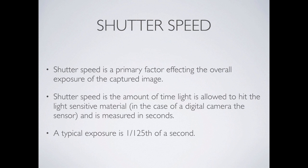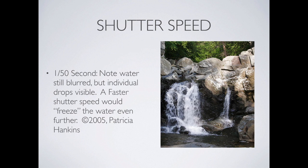The next factor is shutter speed — probably the easiest for people to understand. Shutter speed is how long I'm allowing light to hit the light-sensitive sensor. It's generally given in fractions of a second; a typical shutter speed might be 1/125th of a second. It deals a lot with how we capture motion. At 1/50th of a second we can see individual droplets of water frozen and the ripples in the pond. It's a really short amount of time.